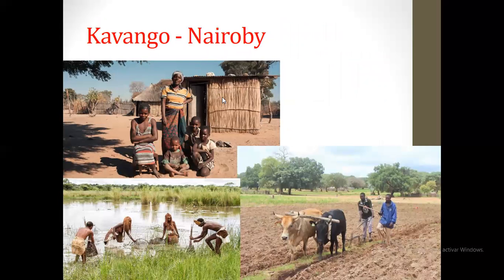Look at the housing of the Cabango people — their rooftops are held up by rocks. You can find similar houses here in Panama in areas like Tumba Muerto and San Miguelito. Traditionally they hunt and fish in the same way as always, and they work the land with two oxen — they don't have a tractor to help speed up their work.